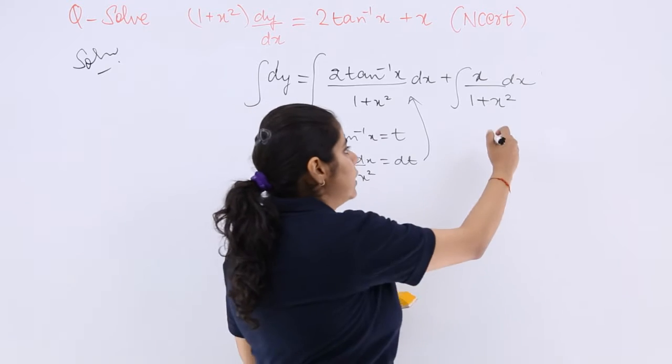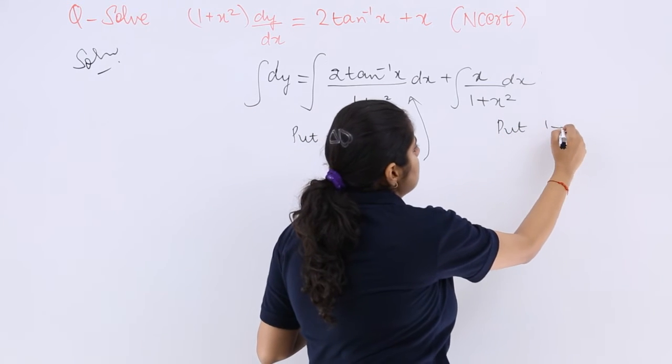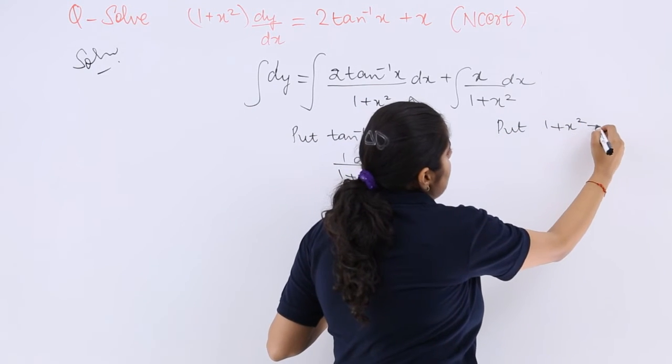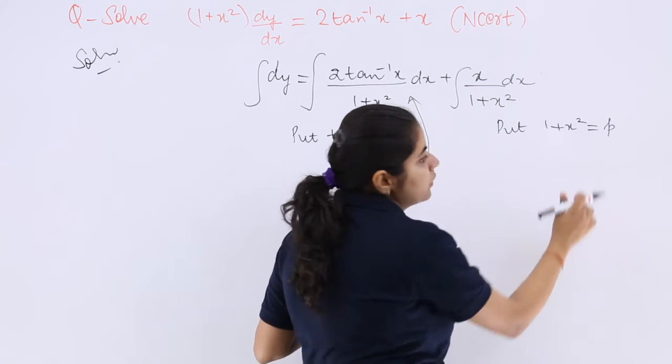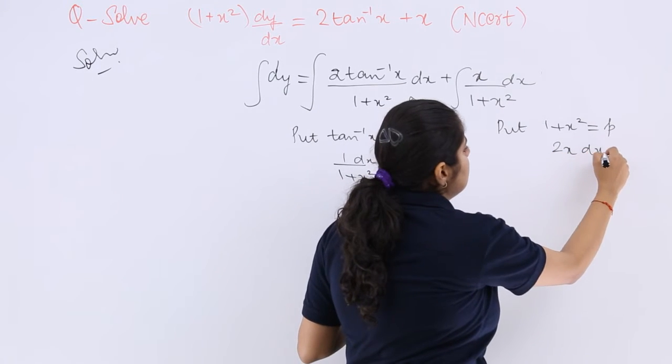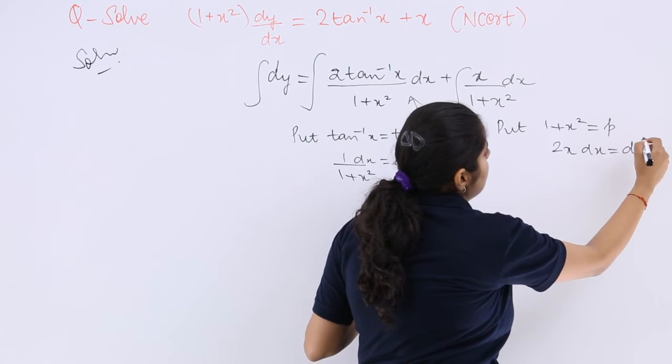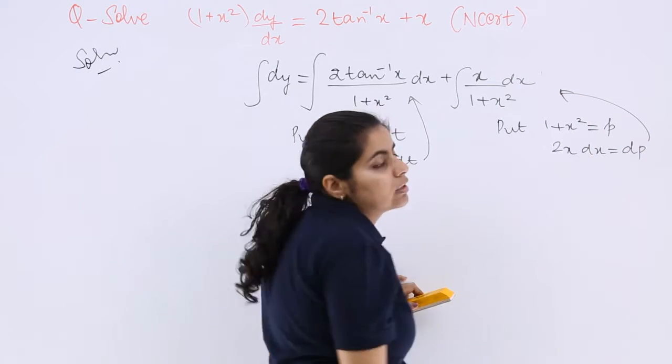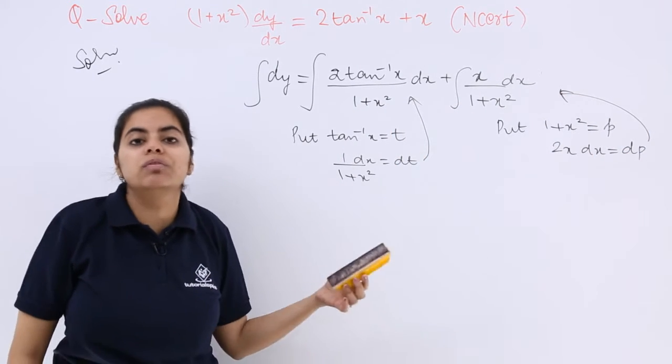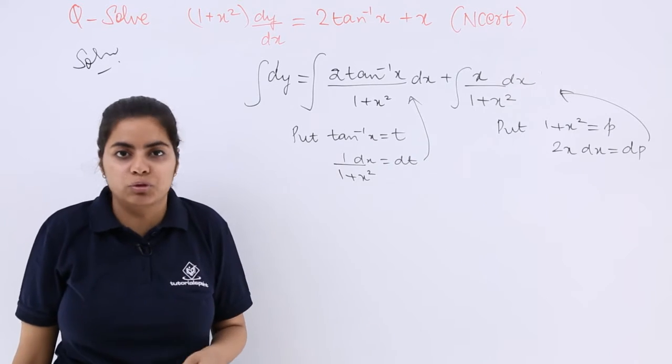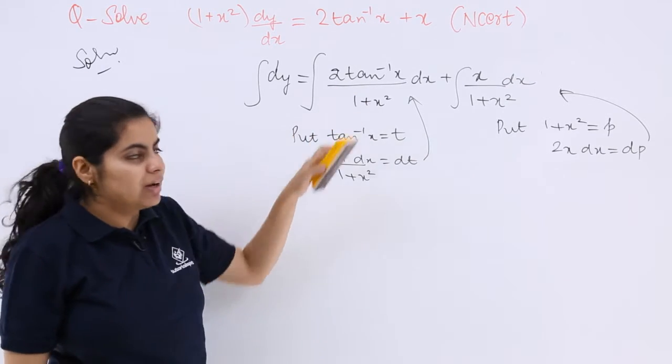Similarly you come here. If I write put 1+x² = p, then you have 2x dx = dp. Even this should benefit here. Only then I will substitute when I find that there is something fruitful.